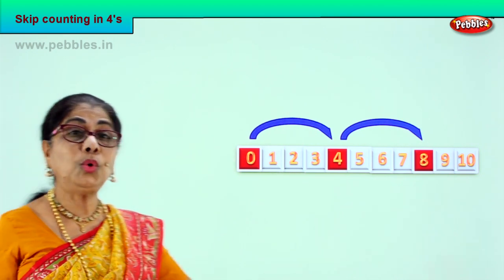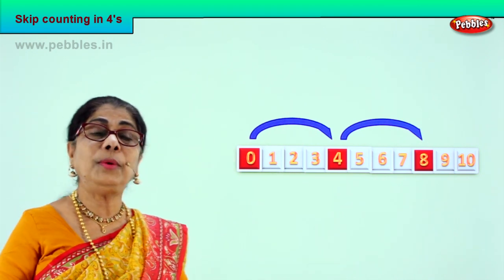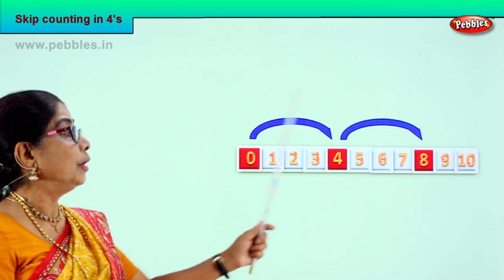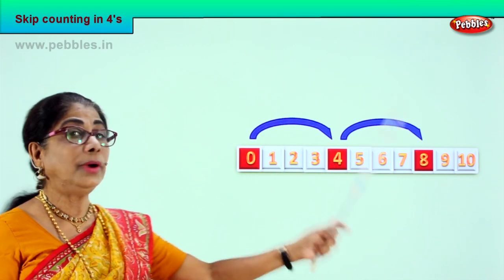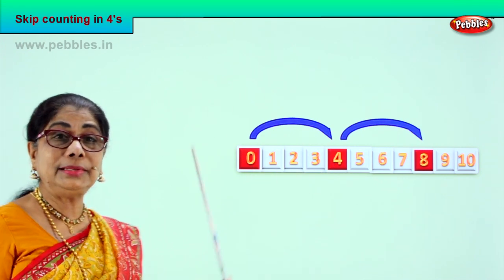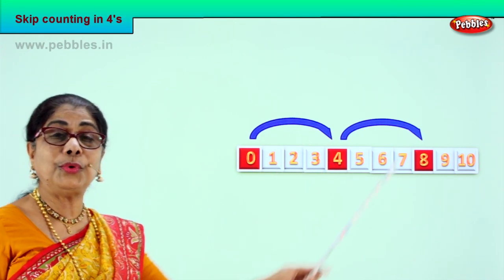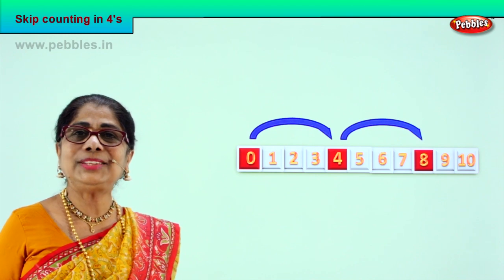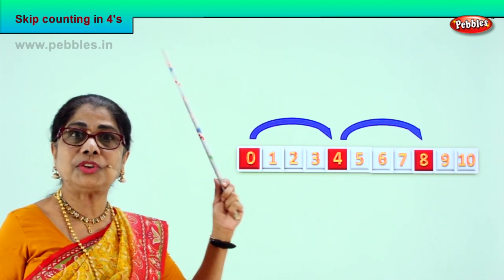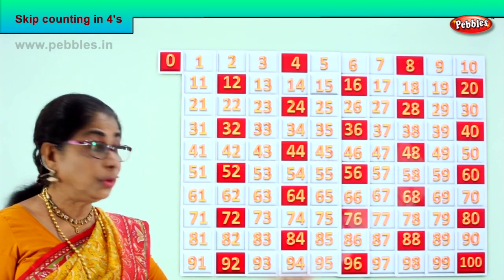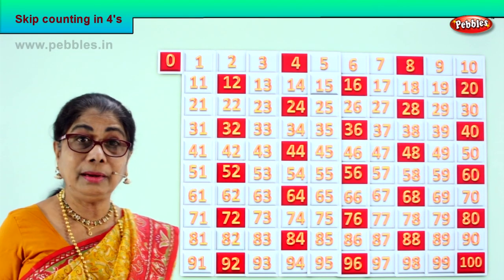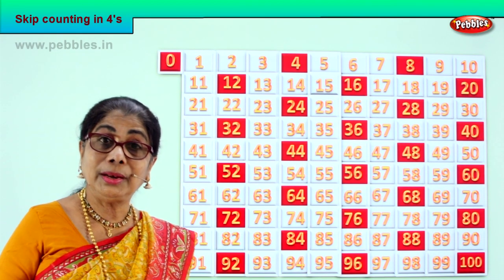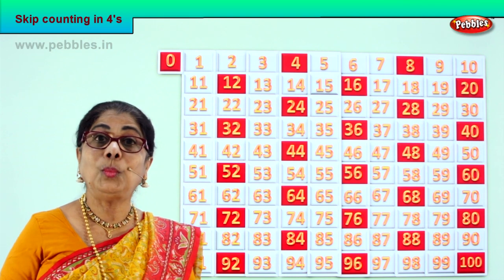Now we are going to look at the full picture. 4, 8. 0, 4, 8. Let's look at the full picture of 0 to 100. Look, we'll do it together.